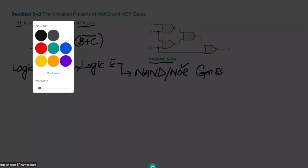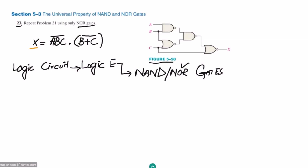How many inputs do I have here? I have three inputs — a, b, c — and I'll use blue color for them. The input lines are these three. After that, I have to implement this expression: first (abc)', then (b+c)', and at the end multiply them together.